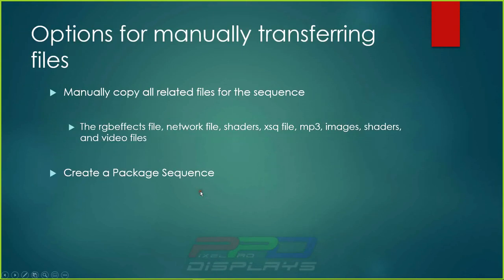The options for manually transferring files mean you need to copy all related files: the RGB effects file (your layout), the network file (your controller tab), any shaders, your XSQ sequence file, the MP3 file, all image files, all shader files, and all video files. That's the manual approach — you have to pick out each one. The easiest way, though, is to use the Package Sequence function, which came along back in 2016.